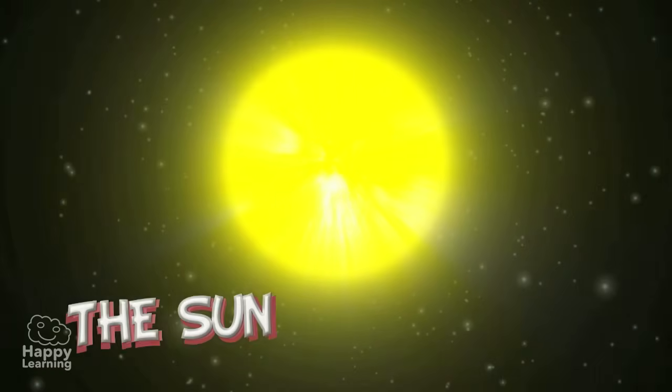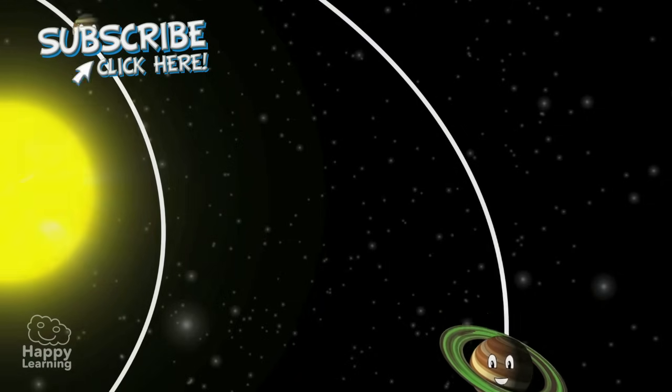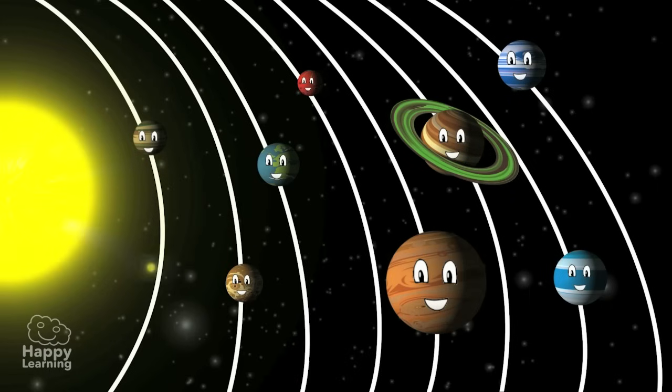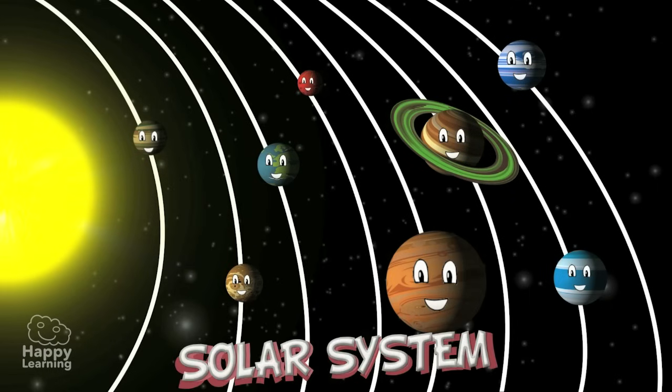But for us, it's the most important star shining in the sky. Planets move around the Sun, and so do comets and asteroids. Well, the Sun and everything that revolves around it is what we call the solar system.